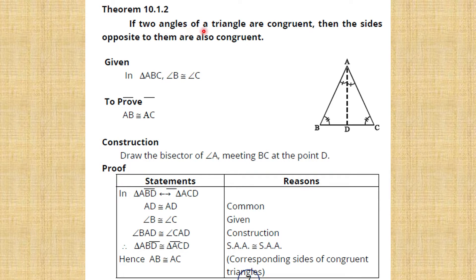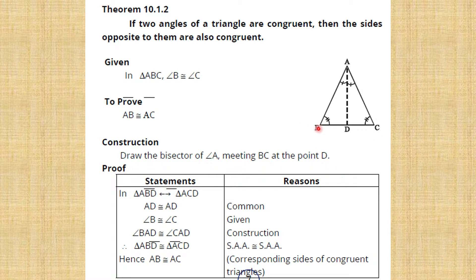What is given: two angles are congruent — angle B and angle C are congruent in triangle ABC. We will prove that side AB is congruent to side AC.